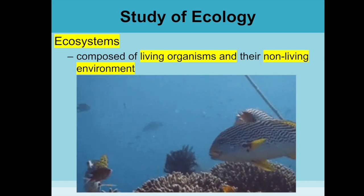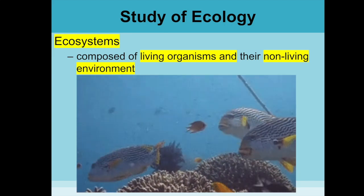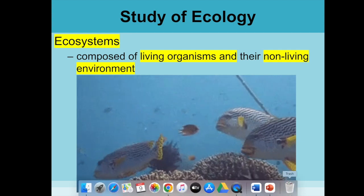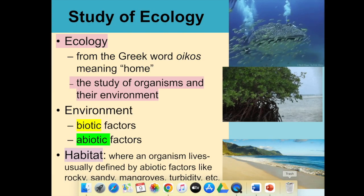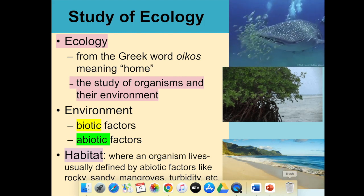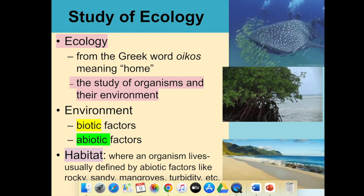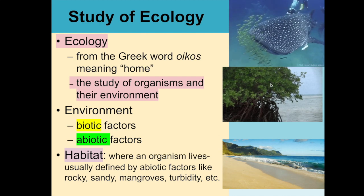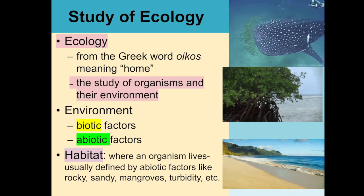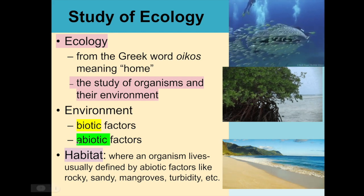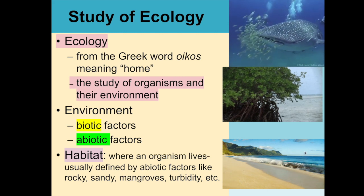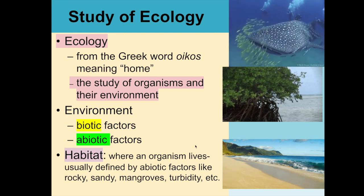Within ecosystems, an ecosystem is composed of all of the living and the non-living things in the environment. The word ecology comes from the Greek word oikos, meaning home, and it's made up of biotic factors — the living things in the environment, like mangrove trees, whale sharks, or humans swimming around — or abiotic factors like currents, waves, and water temperature.